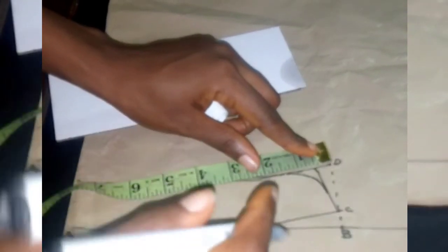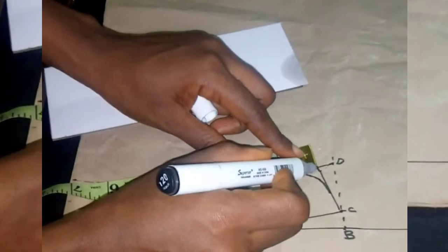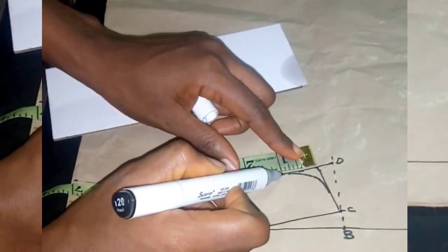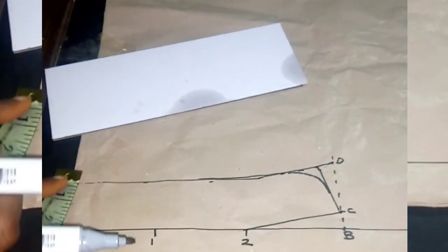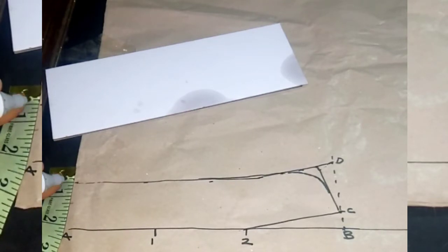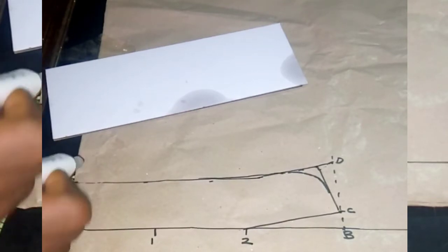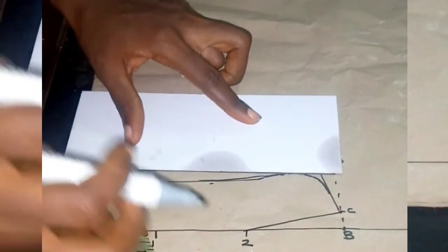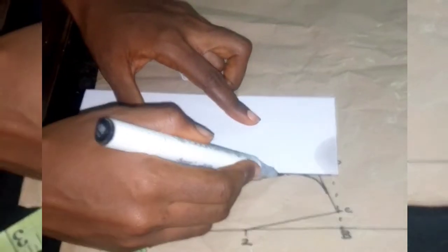I'm going to be measuring one inch for button allowance, one inch, then from that point 0.5 inch. Then you connect the line at the point you call it A point.